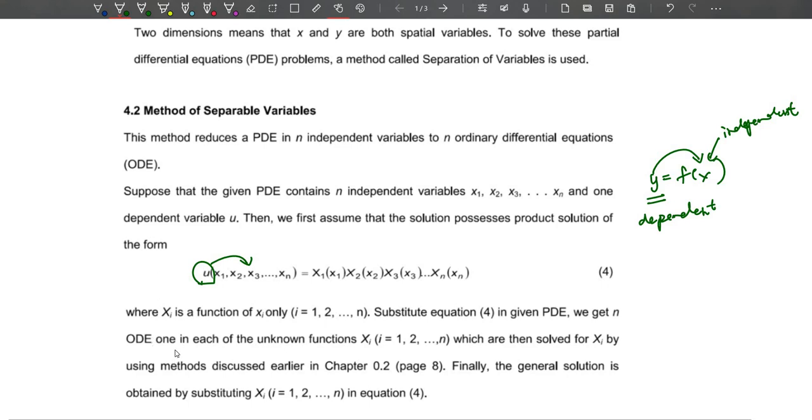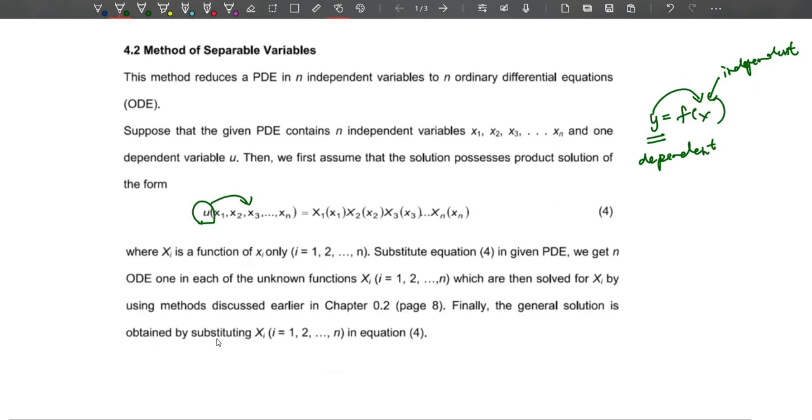We get n ODEs in each of the unknown functions, which are then solved for X_i by using methods discussed earlier. And finally, the general equation is obtained by substituting X_i from i to n in equation 4.